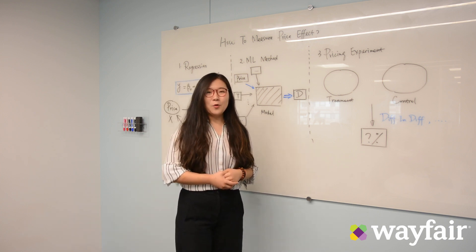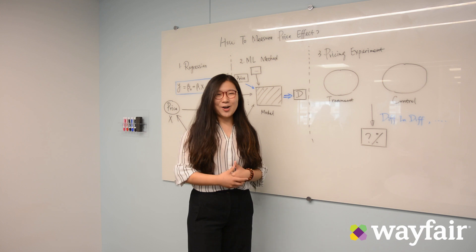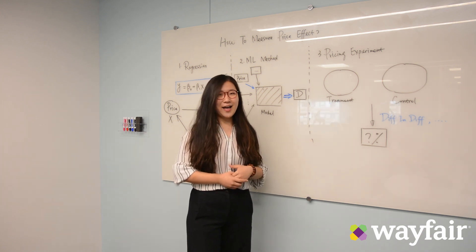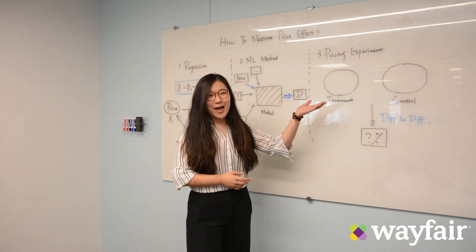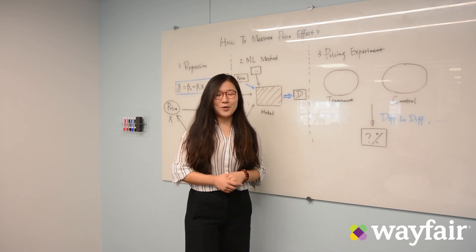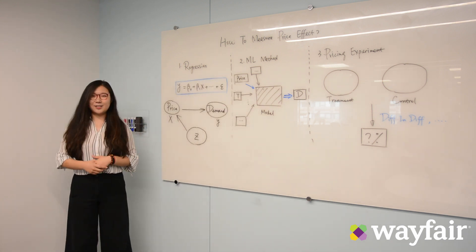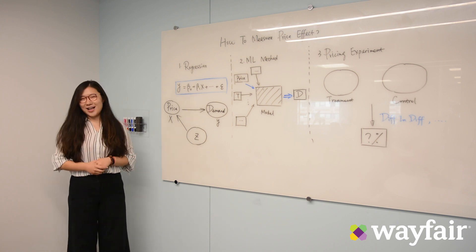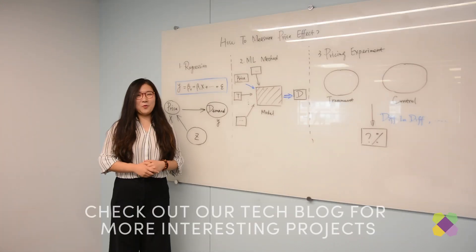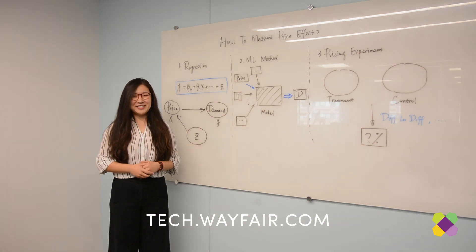This is almost the most perfect way to find out, but again it has a downside: it's really expensive, and it's usually hard to find two identical treatment and control groups. So this is basically what we do here to measure the price effect. Thanks for watching — please come back for more explainer videos.